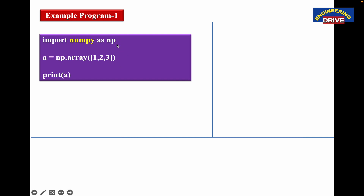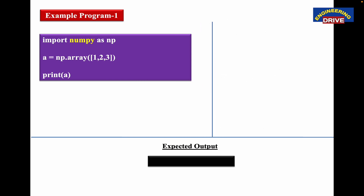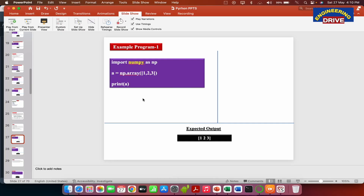Most of you may wonder what 'as np' means. The library name is NumPy, but if you don't want to type the full name throughout your program, you can create an alias — an alternative name. So instead of NumPy I want to use 'np', and for that you use the 'as' keyword. Then we take a variable and create a one-dimensional array consisting of three values: 1, 2, and 3, and display it with the print function. When you run this, the output will be an array of three values — one two three — with no commas.